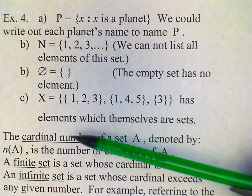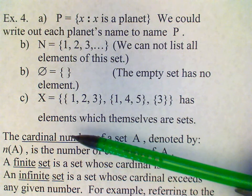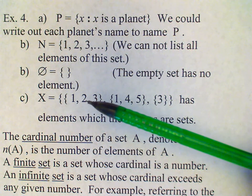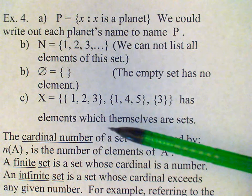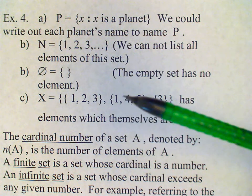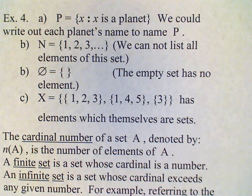This set here, set X, is a set which actually consists of elements which are themselves sets. So in this case, the elements of X are three sets. The set consisting of 1, 2, 3, the set consisting of 1, 4, 5, and the set consisting of the element 3.